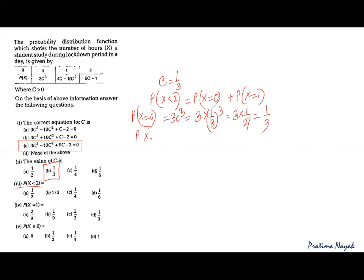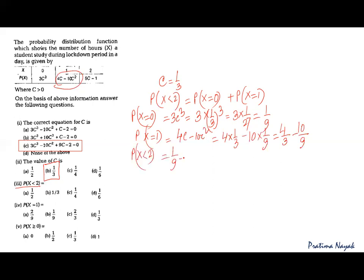So P(X < 2) = 1/9 + 4/3 − 10/9. Taking like terms: 4/3 − 9/9 = 4/3 − 1 = 1/3. So the answer is 1/3, which is option b.